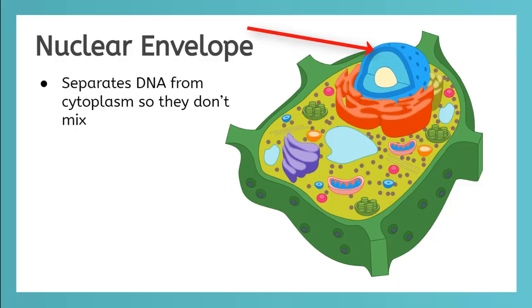The dark blue ring inside the nucleus is called the nuclear envelope. It separates the contents of the nucleus from the cytoplasm so that they don't mix.